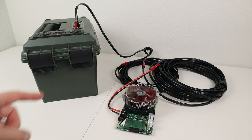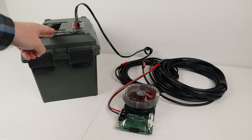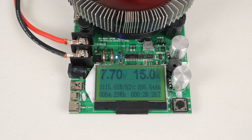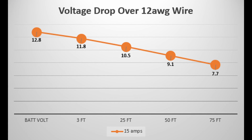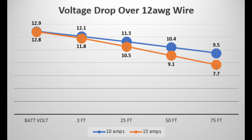For the final test I have 75 feet of 12 gauge wire connected up. We're seeing 12.8 volts at the battery but only 7.78 volts at the load tester — losing over five volts just due to voltage drop in the wiring. I've created a graph to visualize the voltage drop at each cable length for the 15 amp load test. I also did a test at 10 amps, and that graph shows we definitely lost less voltage compared to the 15 amp load.